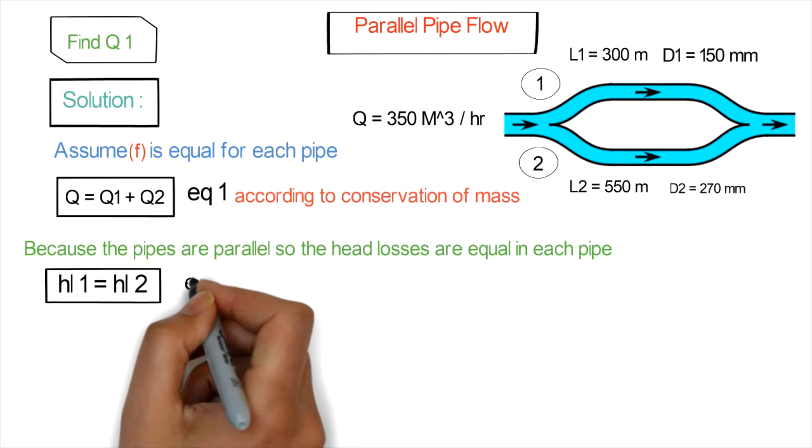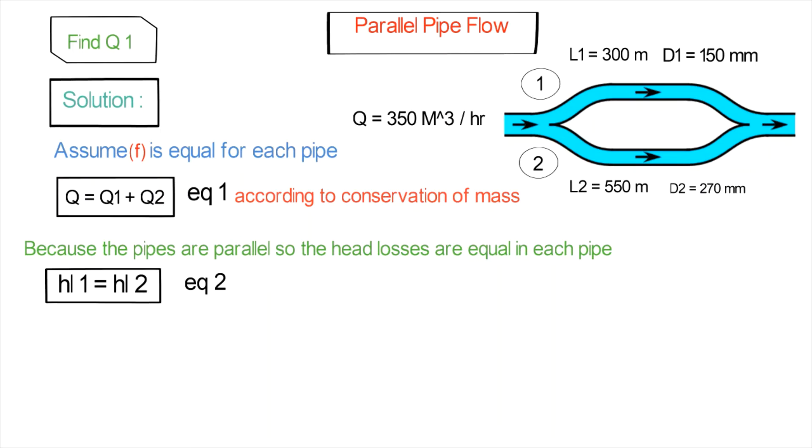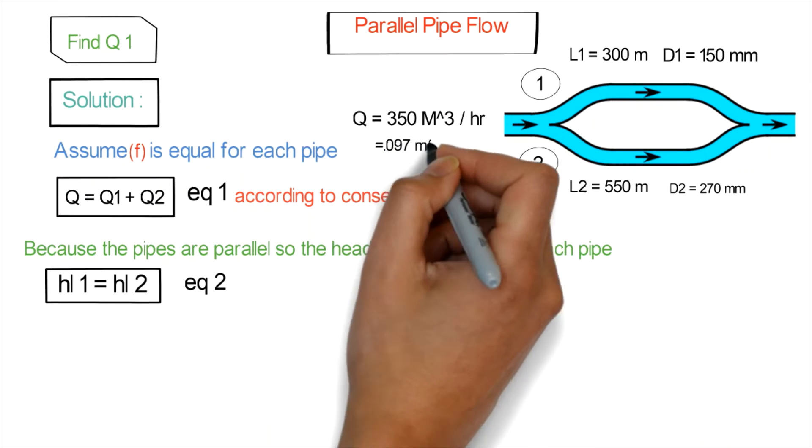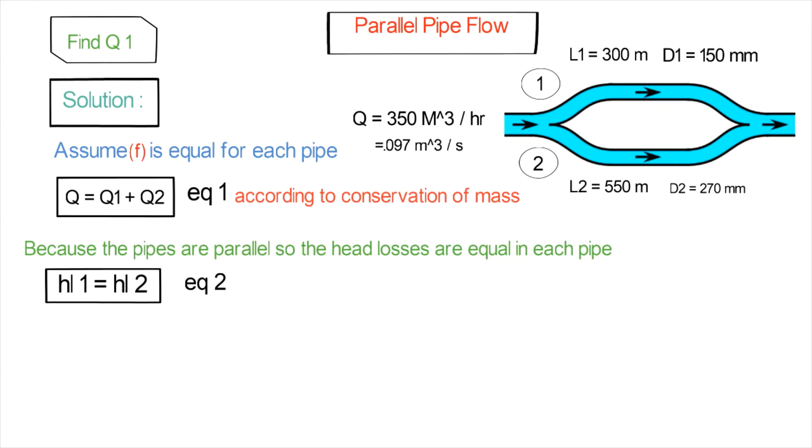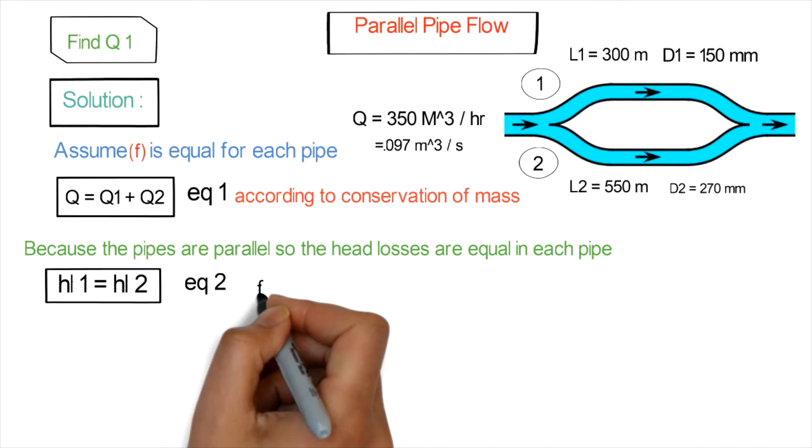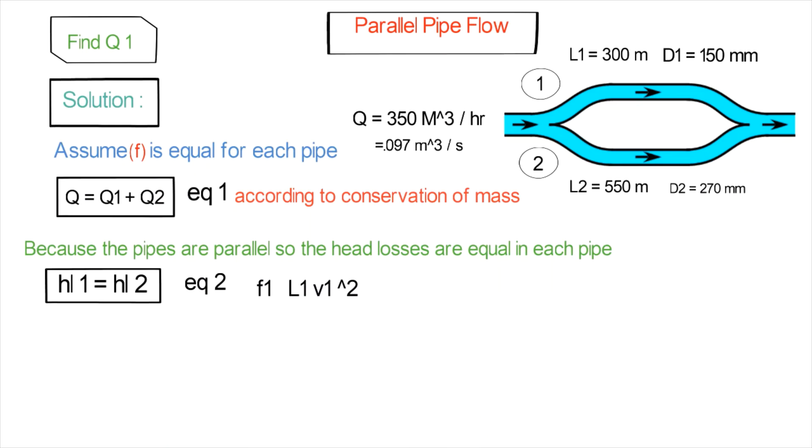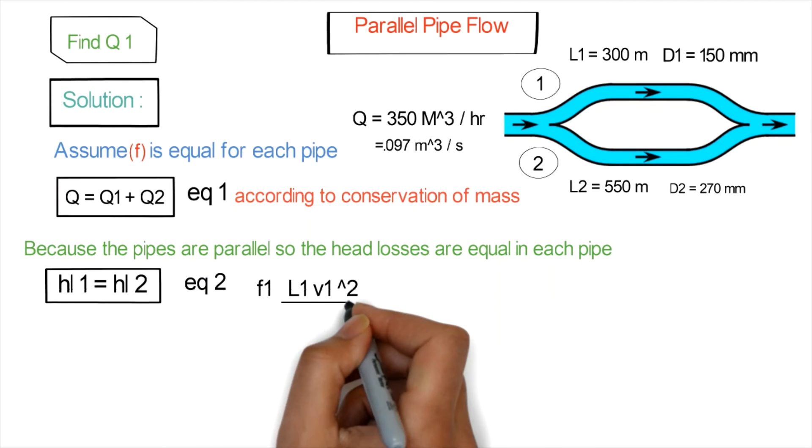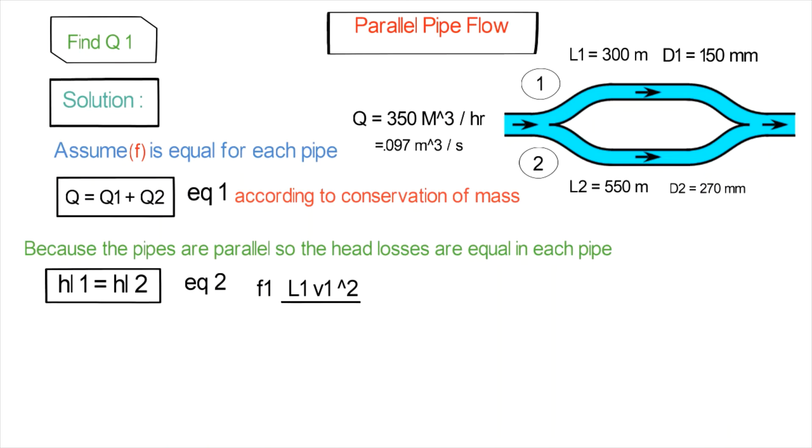According to the Darcy-Weisbach equation, we have f1 times L1 times V1 squared, where L1 is the length of pipe one and V1 is the velocity in pipe one, divided by D1 times 2g, equals f2 times L2 times V2 squared divided by D2 times 2g.